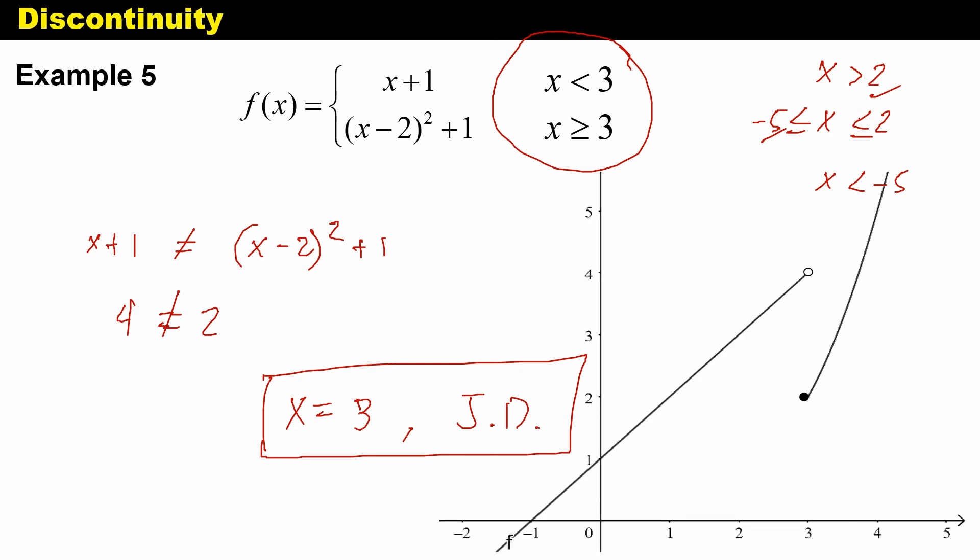Here's the graph of this particular piecewise function, showing the jump discontinuity at x = 3. That ends our discussion about discontinuity, and I hope you learned something in this video. If you have any questions or clarifications, just comment down below. That's all for this video — see you in the next one.